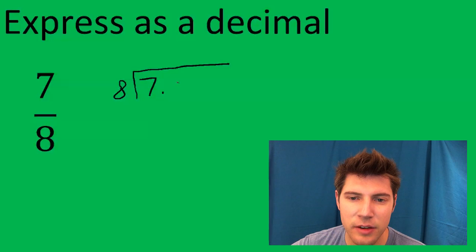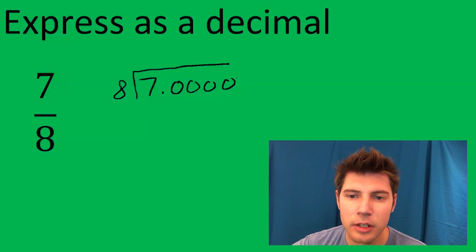And we can call 7 the same thing as 7.000. Doesn't matter how many zeros. So now I can just do long division.